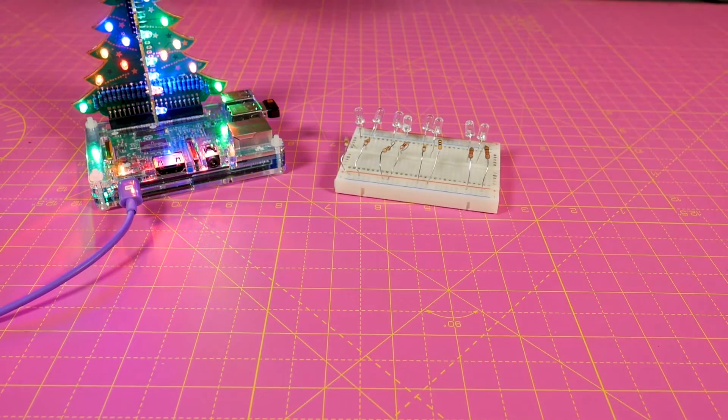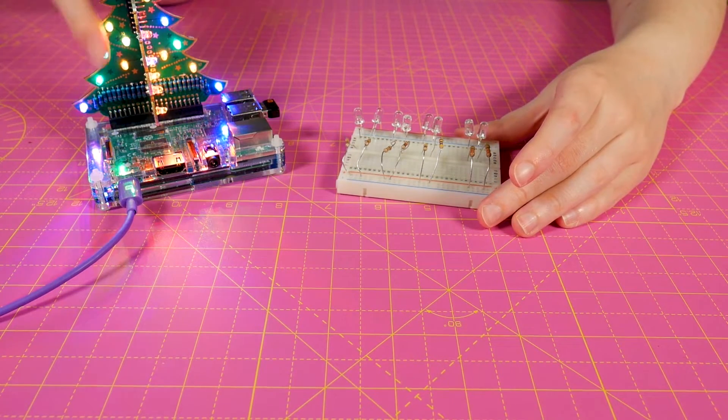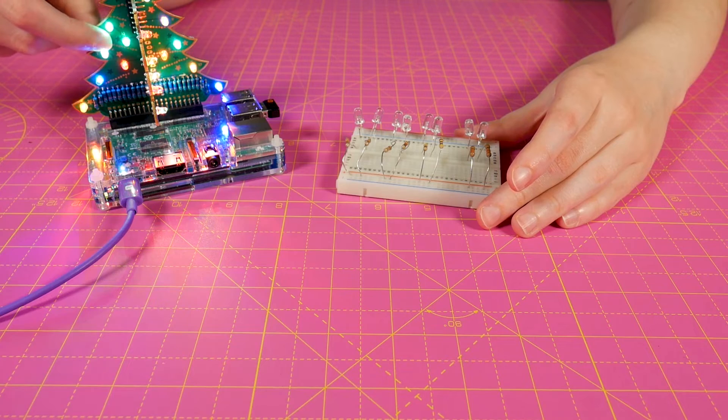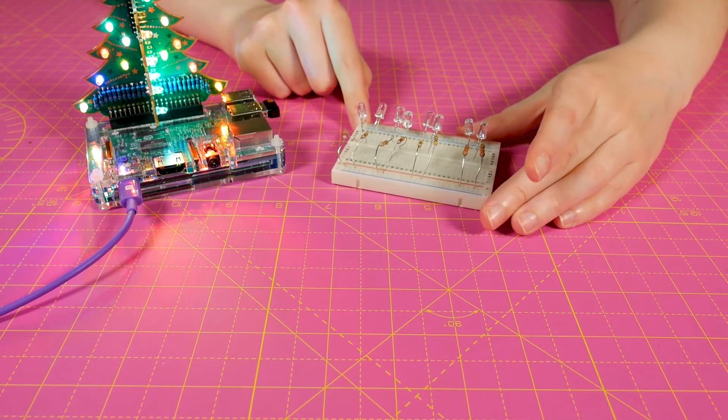I've been playing around a lot with them lately and I thought it might be helpful to have a video. These on the tree here are the three millimeter variant, these are the five millimeter variant, so just slightly bigger.